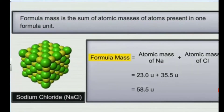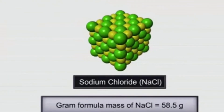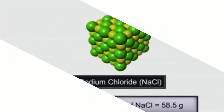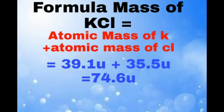For example, calculation of formula mass of sodium chloride: formula mass is equal to atomic mass of sodium plus atomic mass of chlorine, which is equal to 23u plus 35.5u, which is equal to 58.5u. Another example is calculation of formula mass of potassium chloride (KCl): formula mass of KCl is equal to atomic mass of K plus atomic mass of Cl, which is equal to 39.1u plus 35.5u, which is equal to 74.6u.